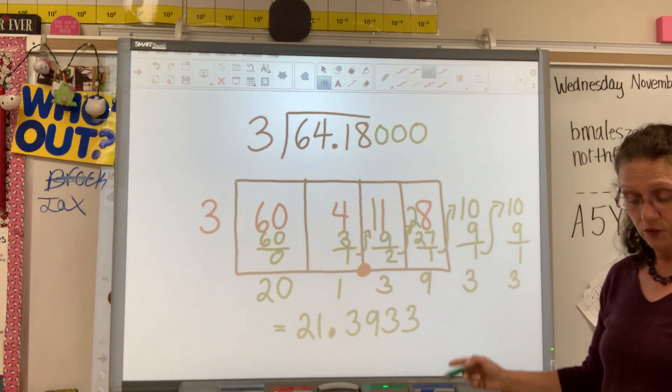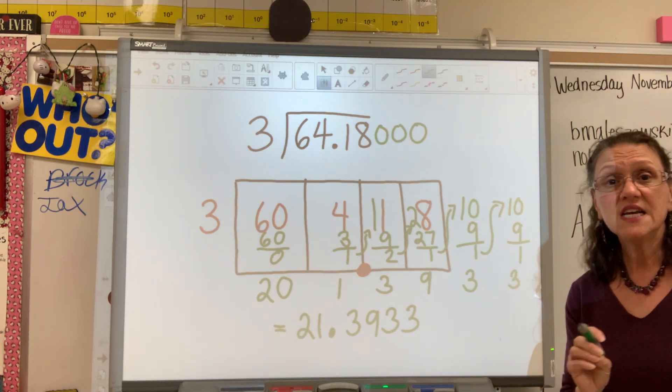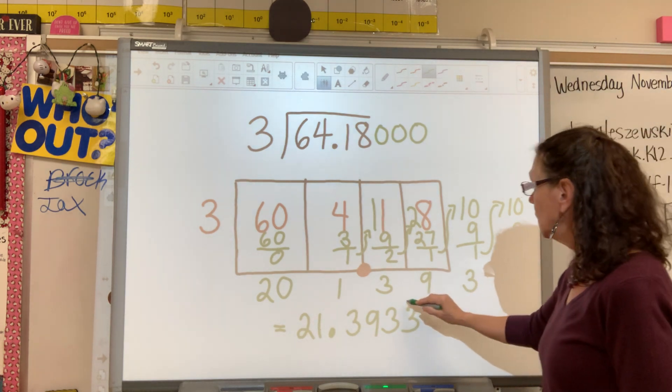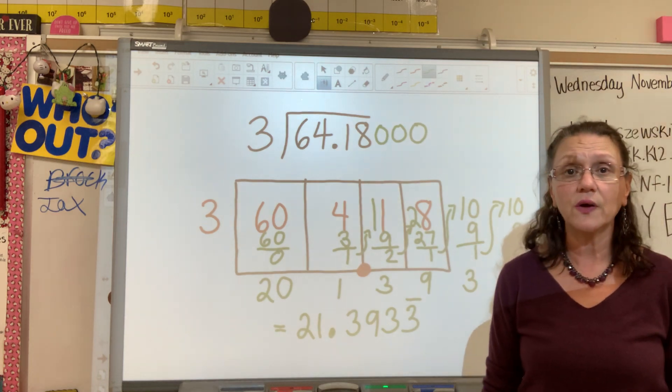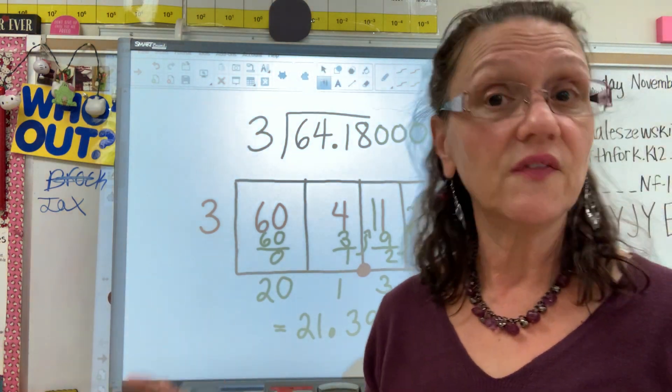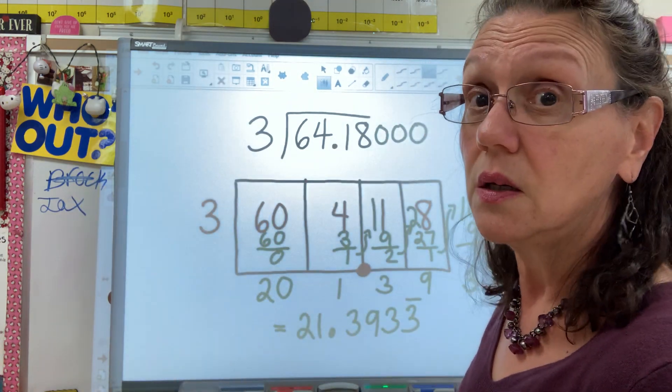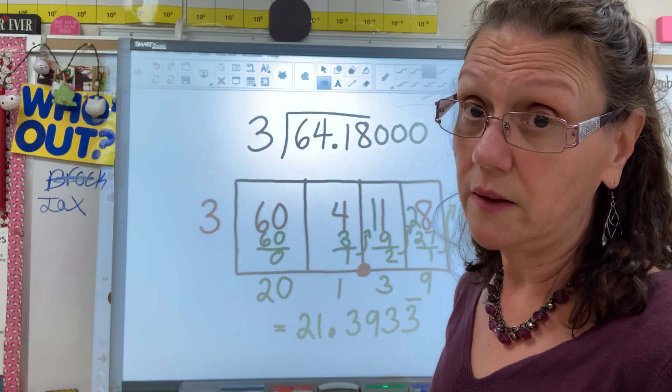Now I went a little nuts here. I'm sorry. And what we do to indicate that this is a repeating decimal is we put a little hat over the very last number. And what that means is if I kept dividing and dividing and dividing, it would just be three to infinity and beyond, which I don't want to do that because ain't nobody got time for that.